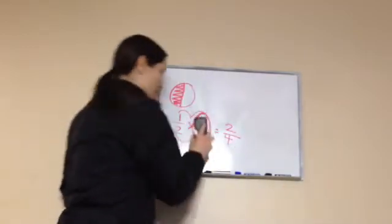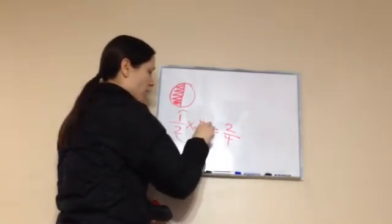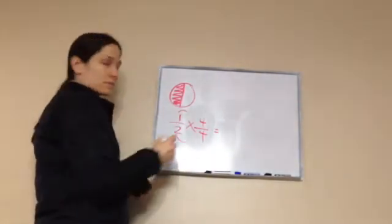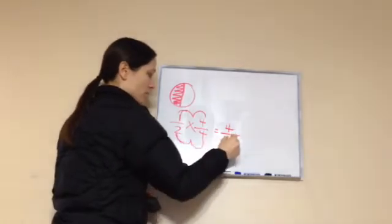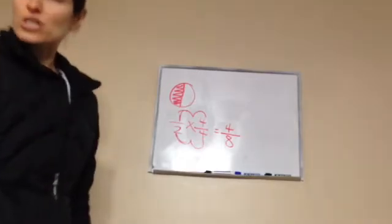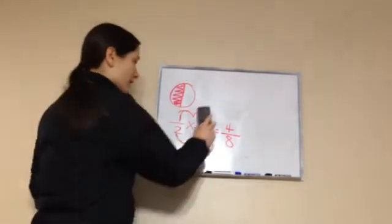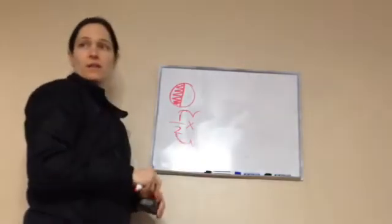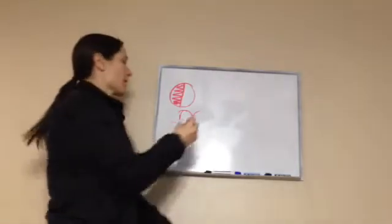Now watch this — let's do times 4 fourths, which is 1 whole. What do you get? 1 times 4 is 4, and 2 times 4 is 8. Very good. And those are the 3 equivalents we just did. So basically, we did 2 over 2, and then we did it 4 times on each other.